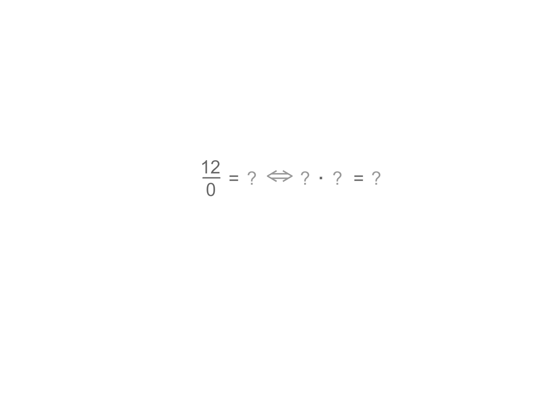Let's consider 12 divided by zero. If 12 divided by zero equals 12, then zero times 12 would be 12. But that's not right. Or if 12 divided by zero equals zero, then zero times zero would be 12. But that's not right.